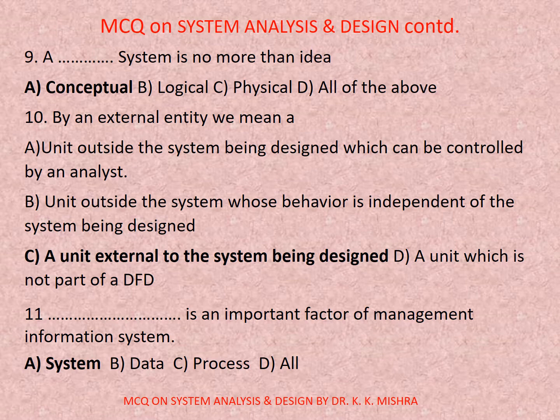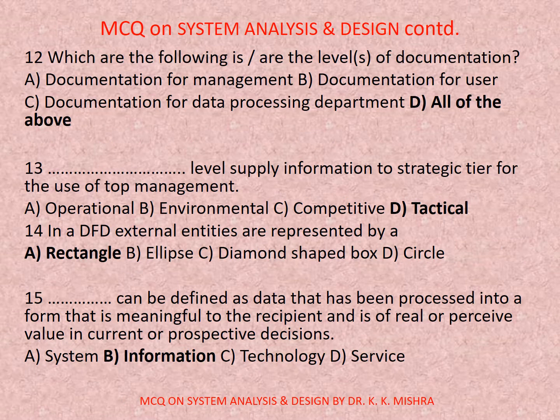Question number eleven: Dash is an important factor of management information system. Options are: a) system, b) data, c) process, d) all. Correct option is a) system. Question number twelve: Which of the following are labels of documentation? Options are: a) documentation management, b) documentation for users, c) documentation for data processing department, d) all of the above. Correct option is d) all of the above.